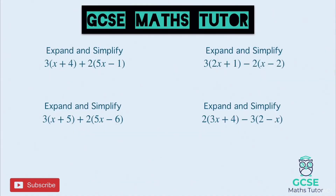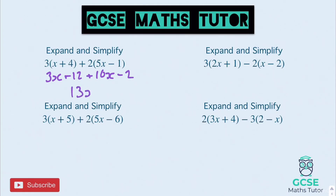Here are some for you to have a go at — pause the video and try these four questions. The first one expands to 3x plus 12, and the next bracket expands to plus 10x minus 2. Tidying up: 3x and 10x makes 13x, and positive 12 minus 2 is plus 10. So the answer is 13x plus 10.